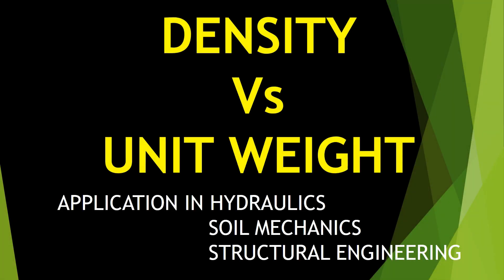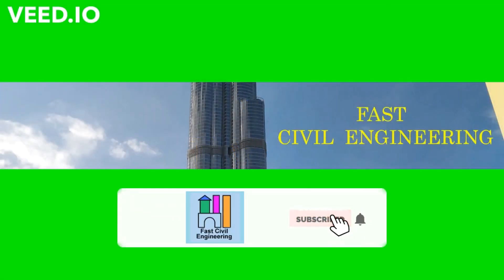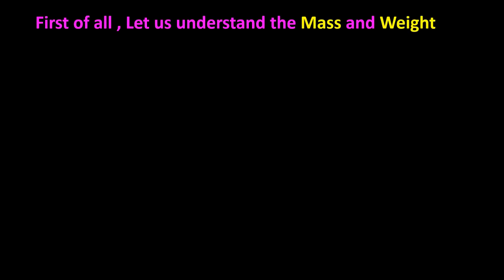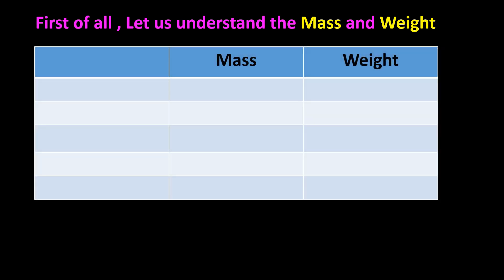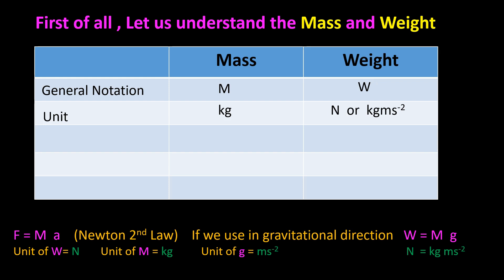Density vs. unit weight. First, let us understand mass and weight. General notation of mass is M; general notation of weight is W. Unit of mass is kilogram; unit of weight is Newton, or kg·m/s². F equals ma — Newton's second law.